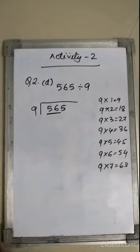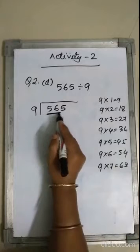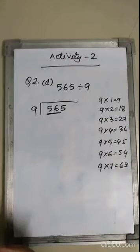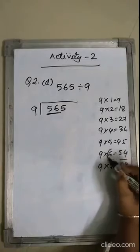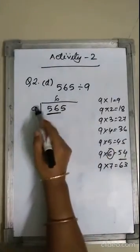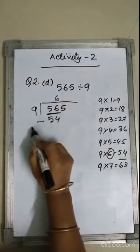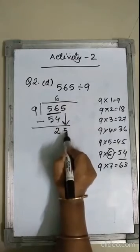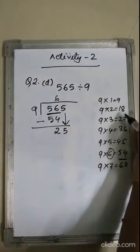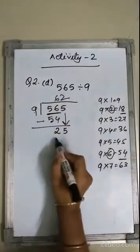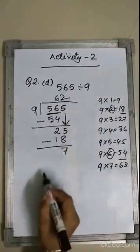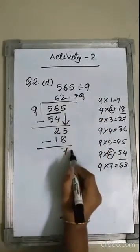I shall explain one more example for your better understanding. 565 divided by 9. The number formed by the first two digits is 56. 56 lies between 54 and 63, so I write 6. 9 into 6 is 54. Subtract to get 2, bring down 5 to get 25. 25 is between 18 and 27, so I write 2. 9 into 2 is 18. Subtract to get 7. So the quotient is 62 and the remainder is 7.